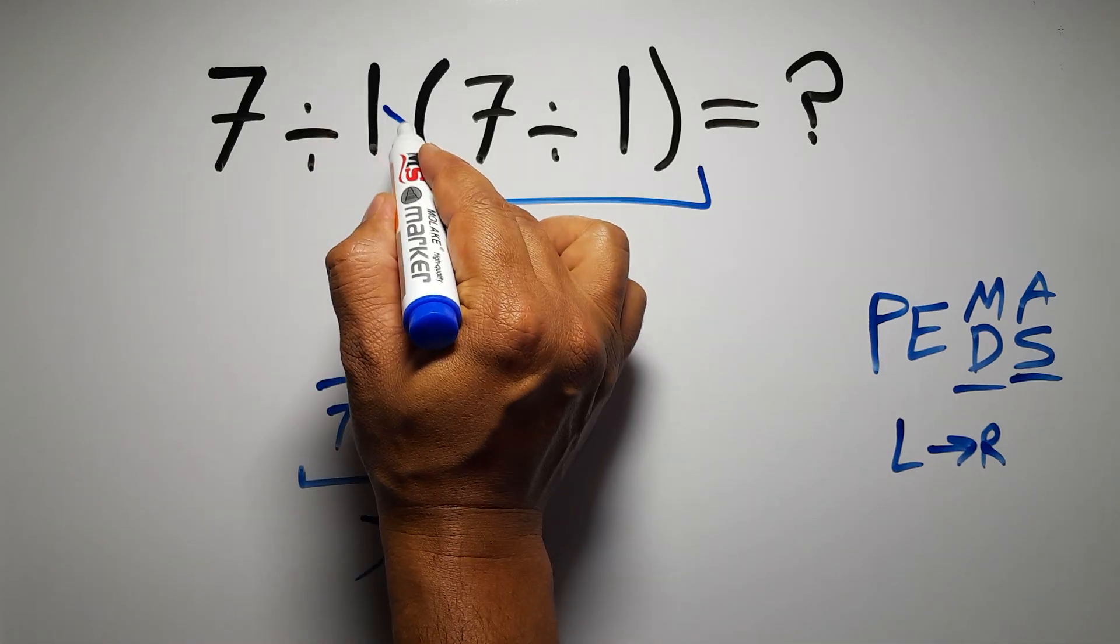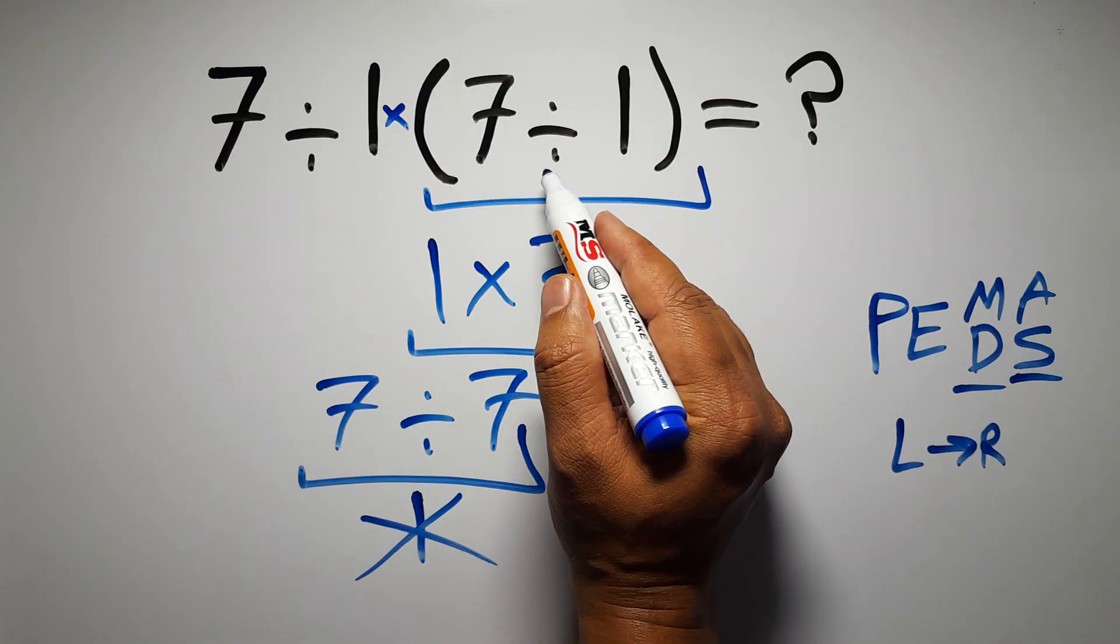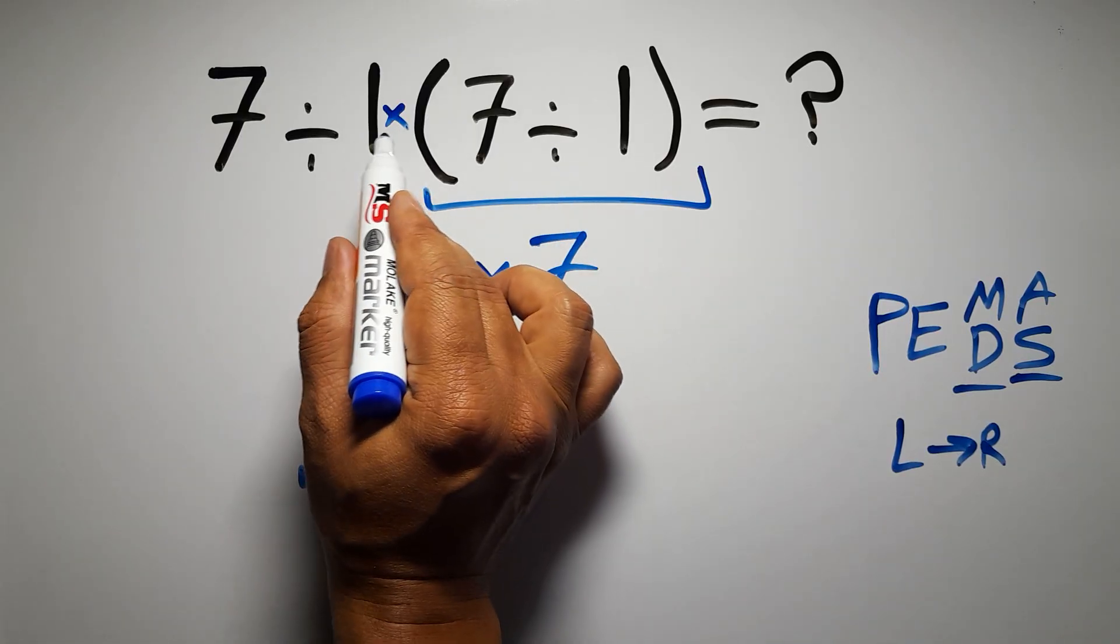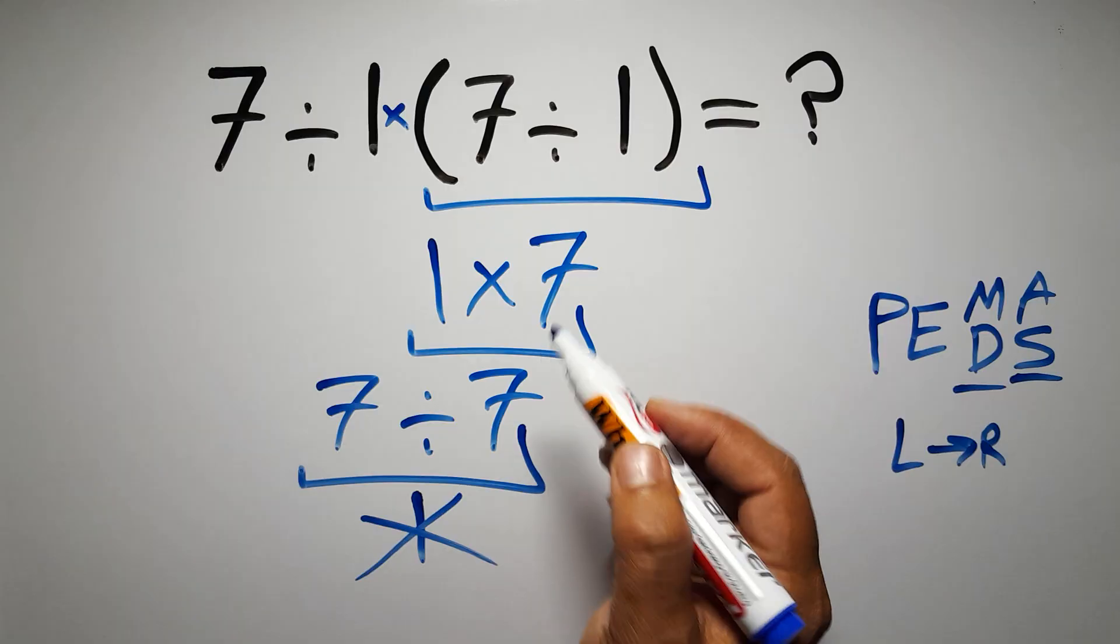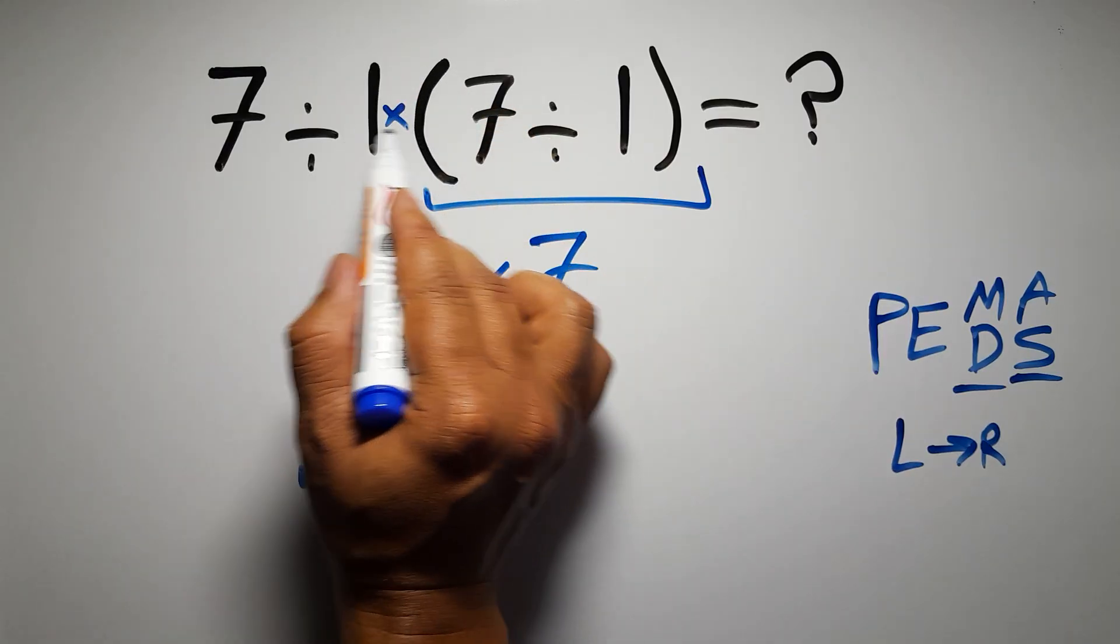In this expression we have one division, one multiplication, and one parentheses. Inside these parentheses we have one division. Here we have a multiplication because in mathematics when a number is placed next to parentheses it means multiplication, and we usually don't write the multiplication sign for brevity.